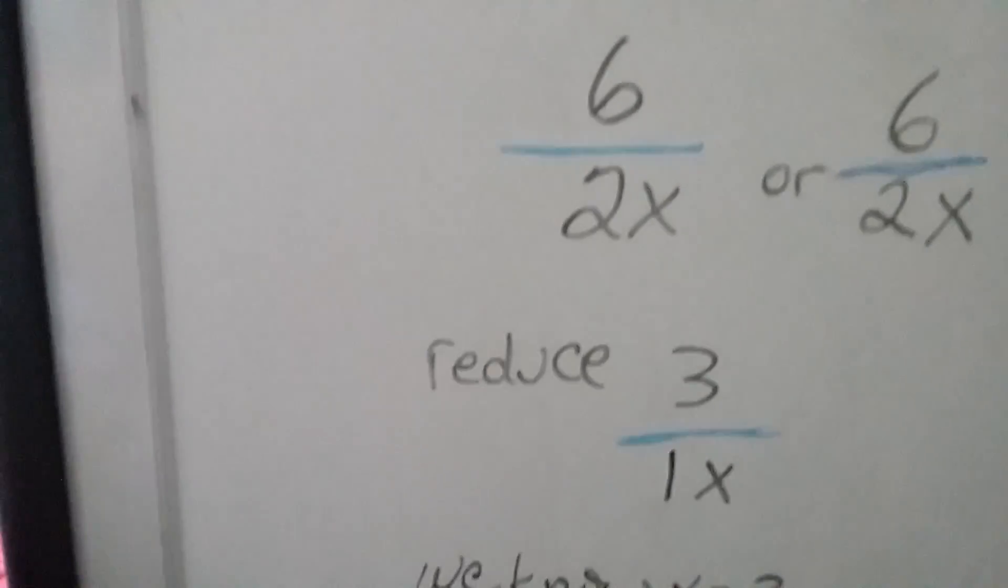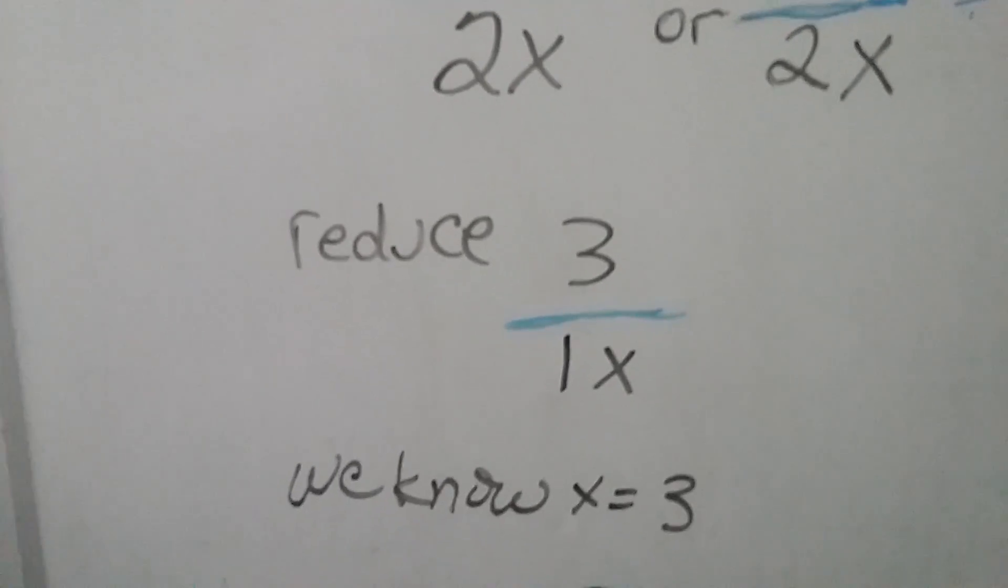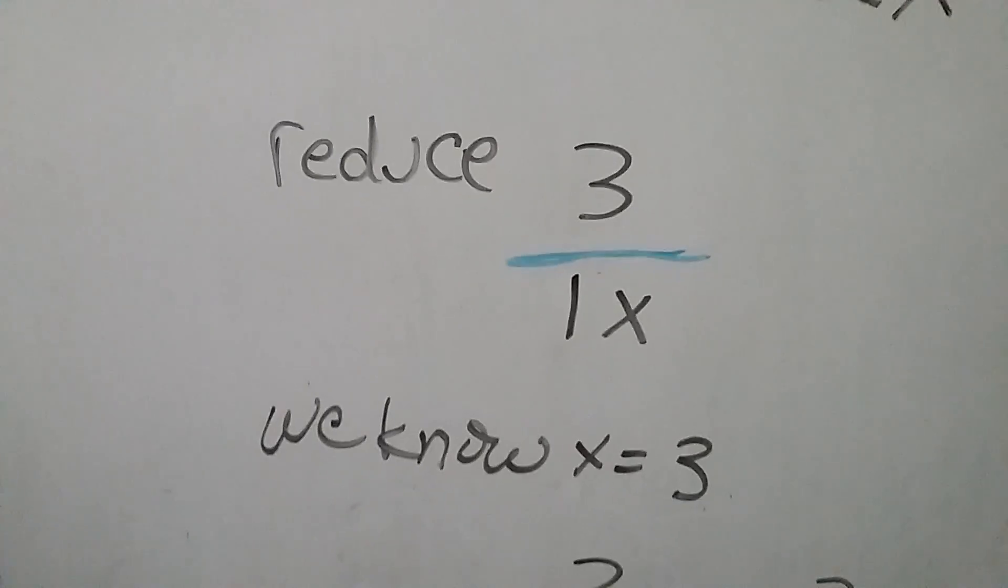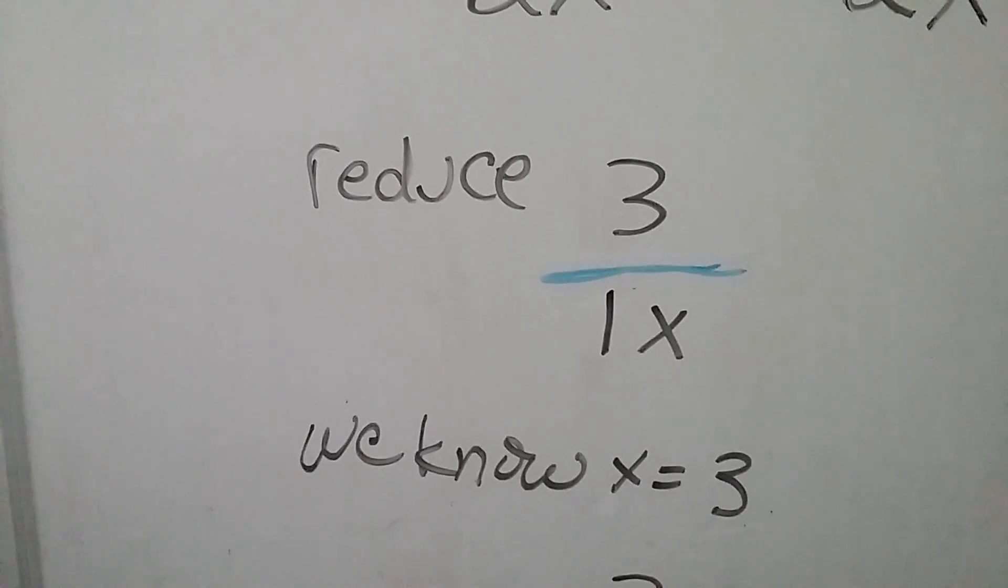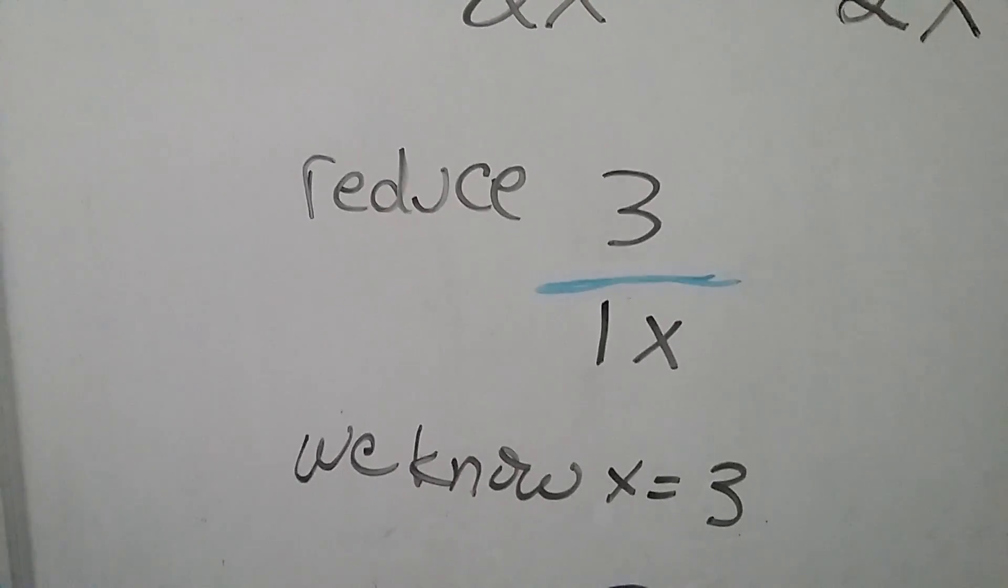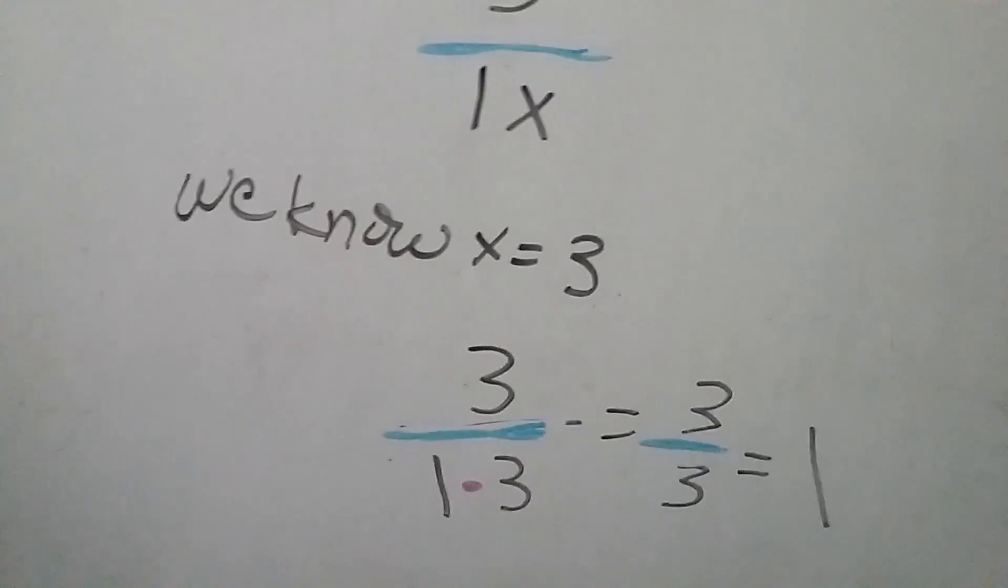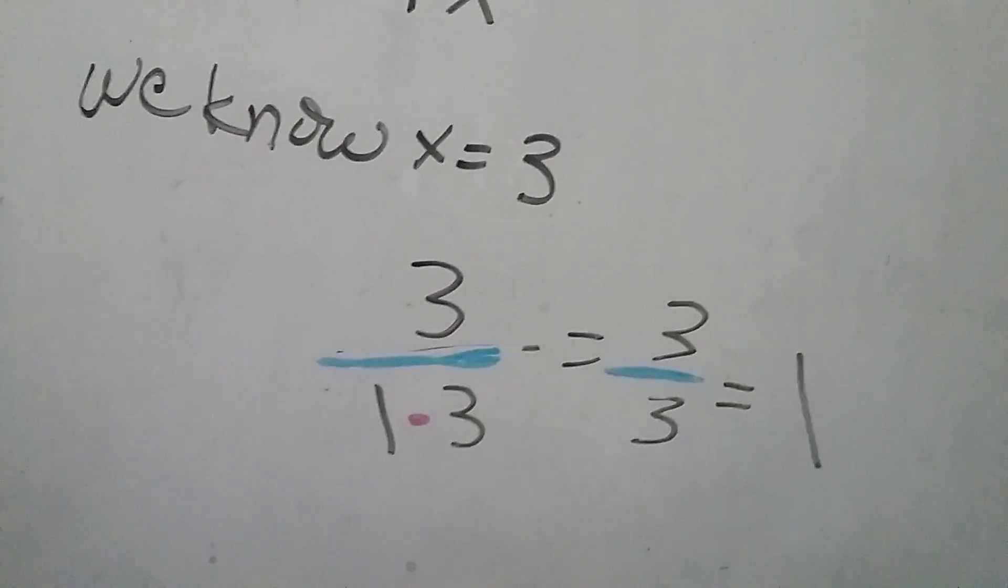So now we go down to when we've reduced this as much as we can to make it simpler or simplified it. We know x equals 3. So if we plug 3 into that problem, 1 times 3 is 3. And I use the dot for multiplication.